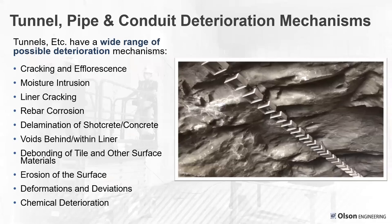Liner cracking and rebar corrosion are related to moisture intrusion, leading to delamination. Another major issue with pipes, conduits, and tunnels are voids behind the liner and even within the liner. One of the most common issues we get asked about for outflow pipes in dams and other water conveyance structures is voiding behind the structure, because that voiding can lead to piping and actual failure of a dam. There's also debonding of tile, erosion of the surface — we've seen cases where several inches of concrete have been lost to erosion mechanisms.